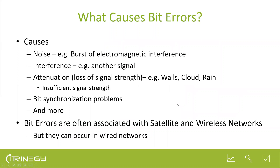What causes bit errors depends on the medium. Take Wi-Fi: it might encounter electromagnetic interference from a device transmitting on the same frequency — for example, microwave ovens have leakage on 2.4 GHz, which can disrupt 2.4 GHz Wi-Fi. There may also be interference from valid signals, attenuation from passing through walls or metal beams, bit synchronization problems where the receiver and sender can't quite synchronize timing, and quite a few more causes.